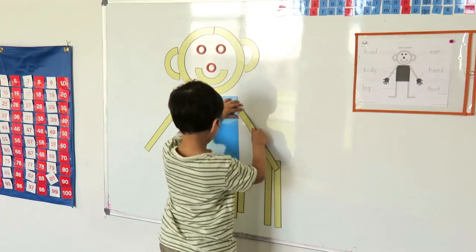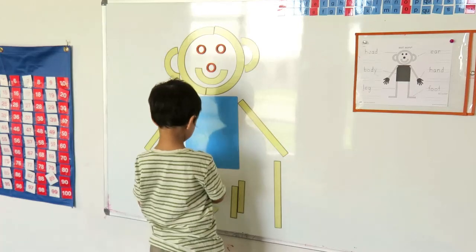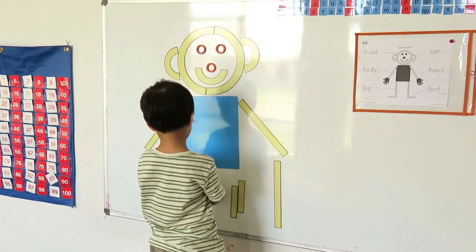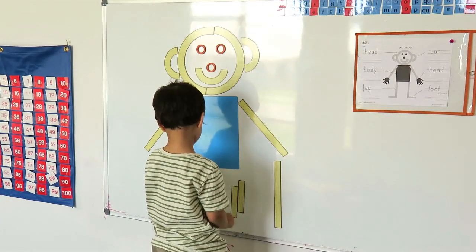There is also a song that goes with this activity that helps children learn where the body parts are and how many there are of each. Like for example, two eyes, two ears, one nose, one mouth, and so forth.